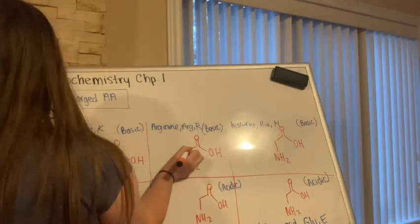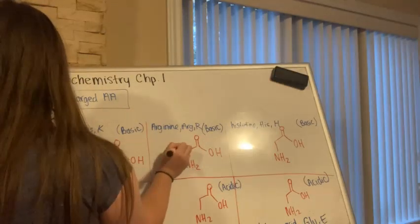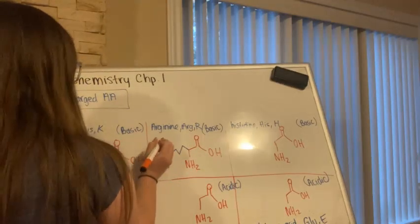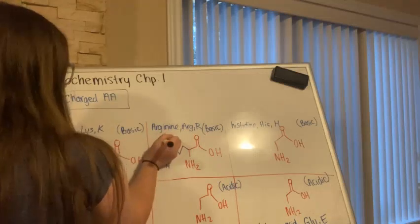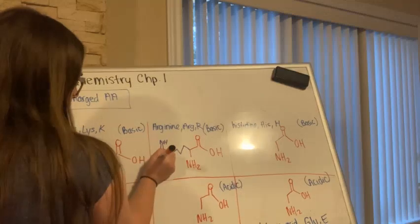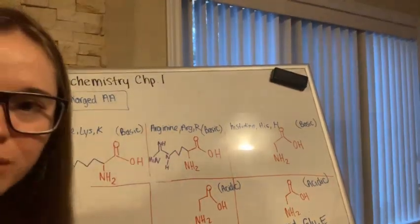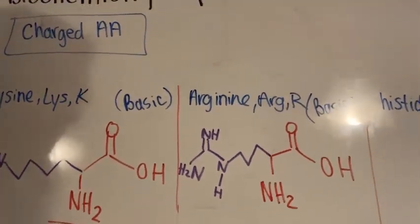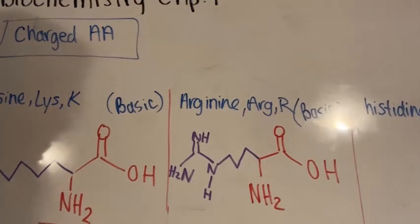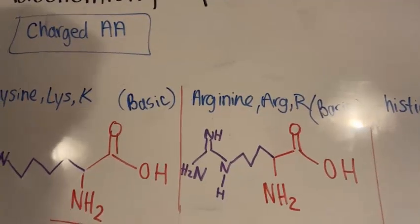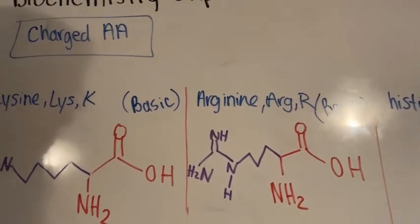Arginine's side chain has a nitrogen, another nitrogen, as well as a third nitrogen. It has a few carbons, a nitrogen with a hydrogen, a double bond to a nitrogen, and finally another nitrogen with two hydrogens.